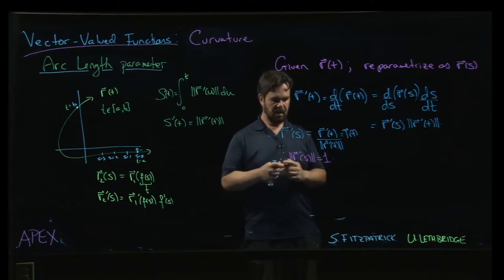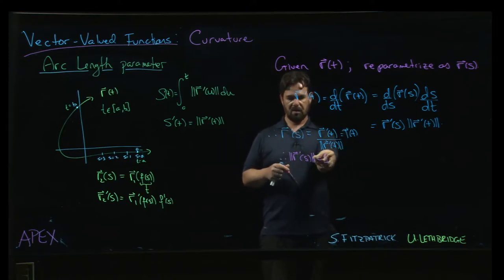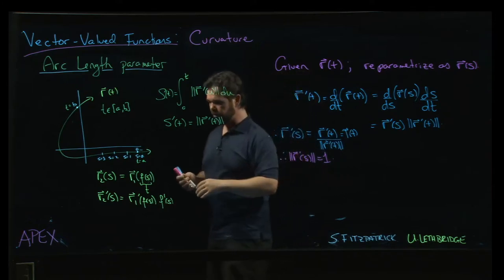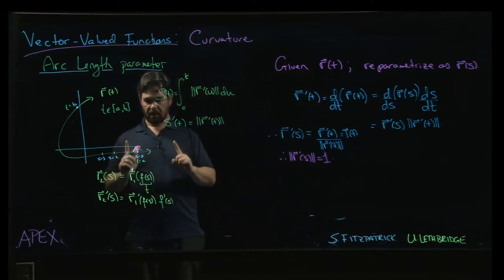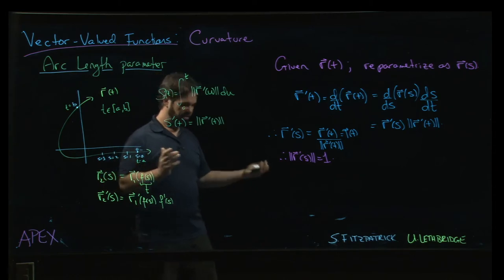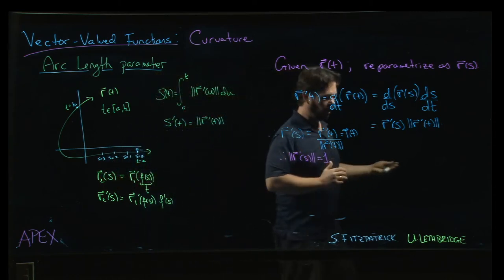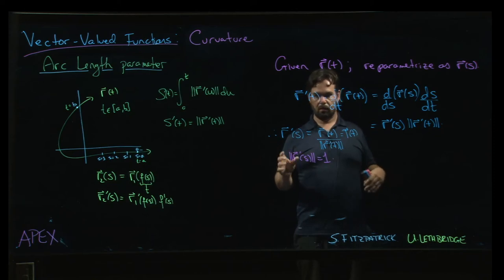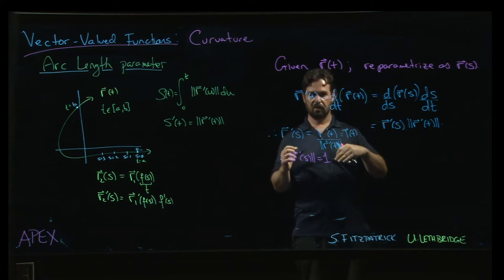And that's kind of this key feature of this arc length parameter, that as you move along a curve, you are moving at a constant speed, a unit speed. You're moving kind of one unit in one second, if you like. And that's why the arc length parameter gets used. It simplifies certain calculations that involve the derivative of some vector-valued function.